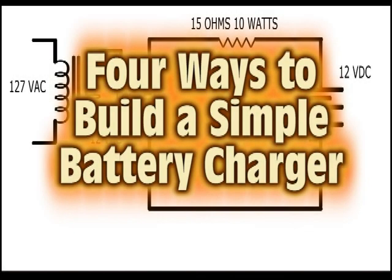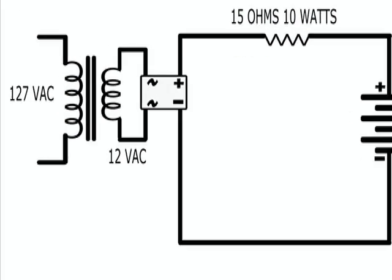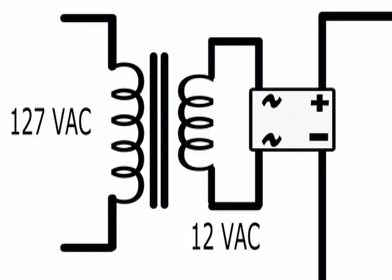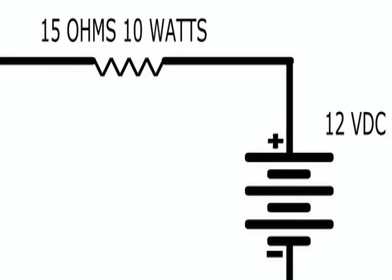Here are four different ways to build a battery charger. Starting with a very simple circuit that involves no more than a 3 amp, 127 volt AC transformer to step the voltage down to 12 volts, a diode rectifier bridge, and a 15 ohm 10 watt resistor as current limiter.